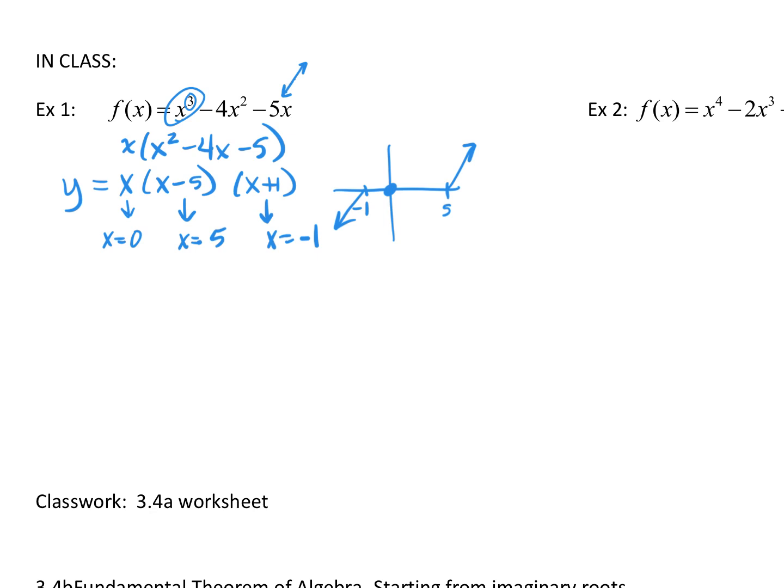And then, yesterday on your quiz, I asked you about multiplicity. This has a multiplicity of a single, because it's x to the first. This factor only appears once, so it's a single. This factor only appears once, so it's a single. All that tells me is that the line is just going to go through the x values I found like regular. Nothing special.